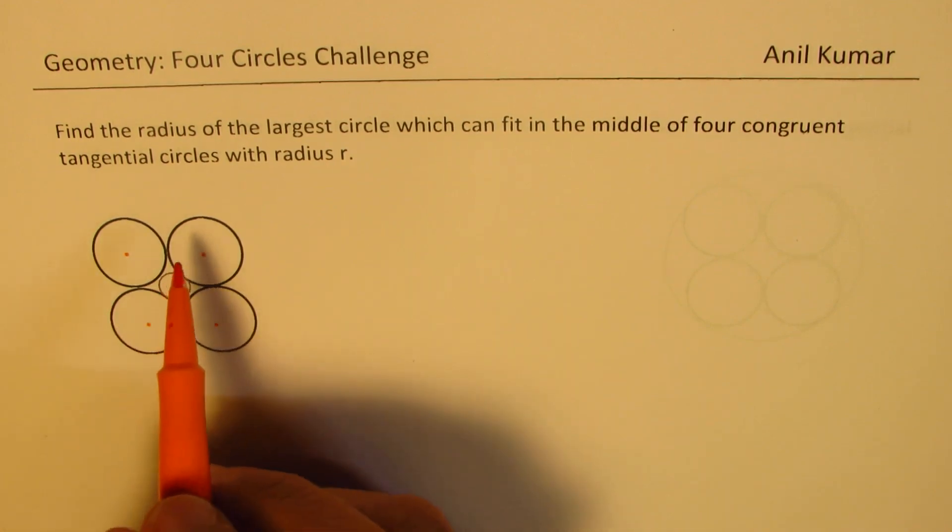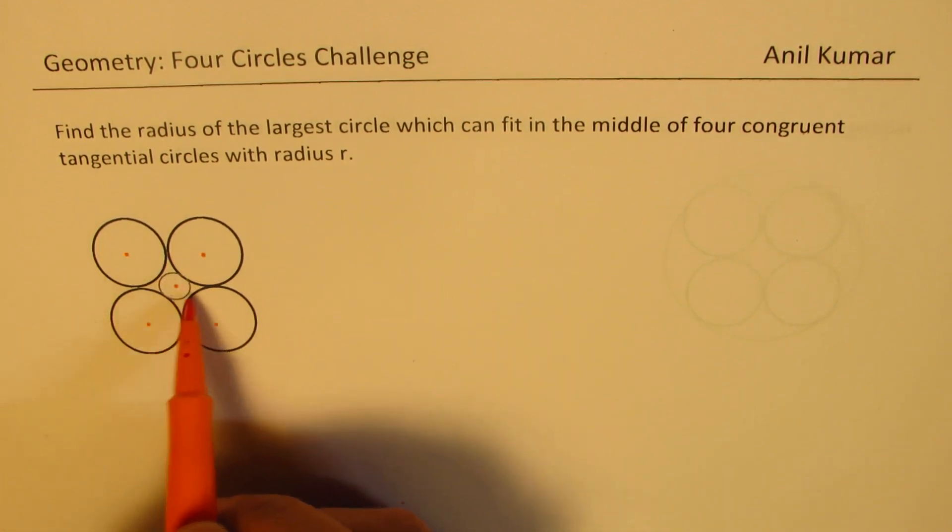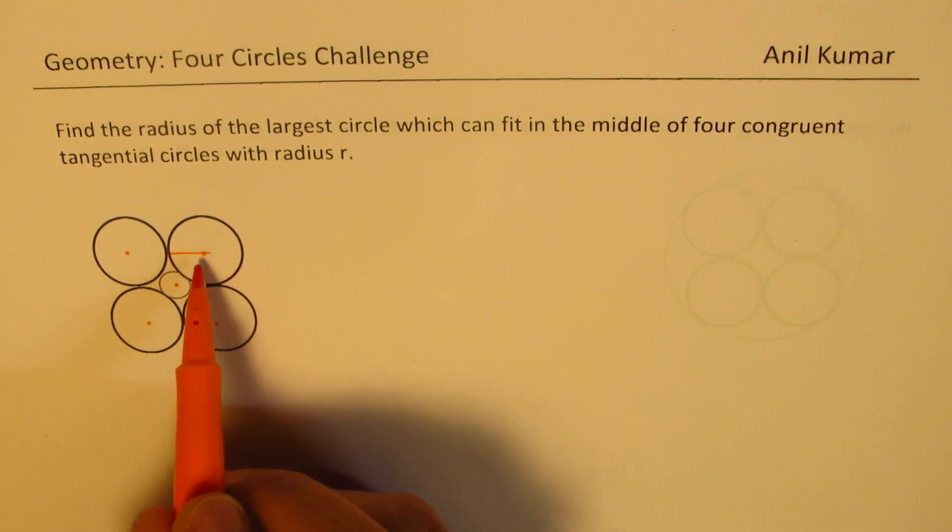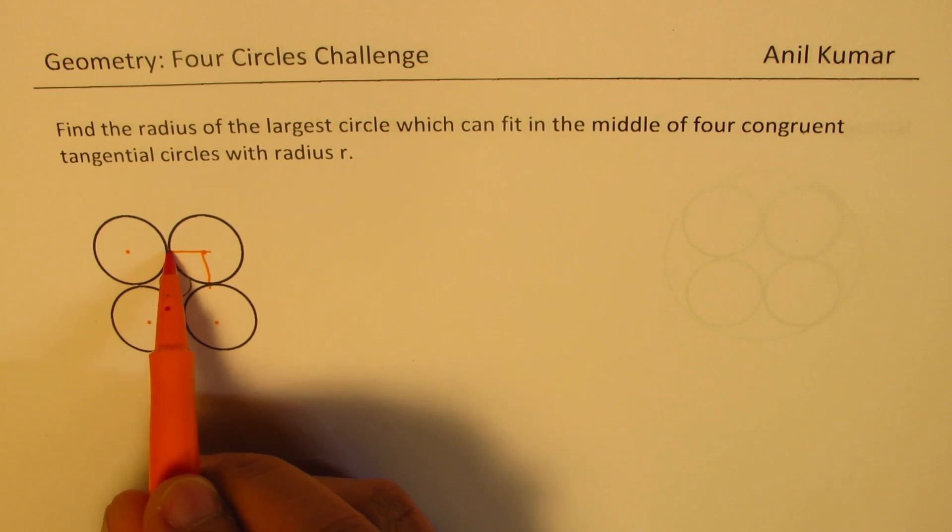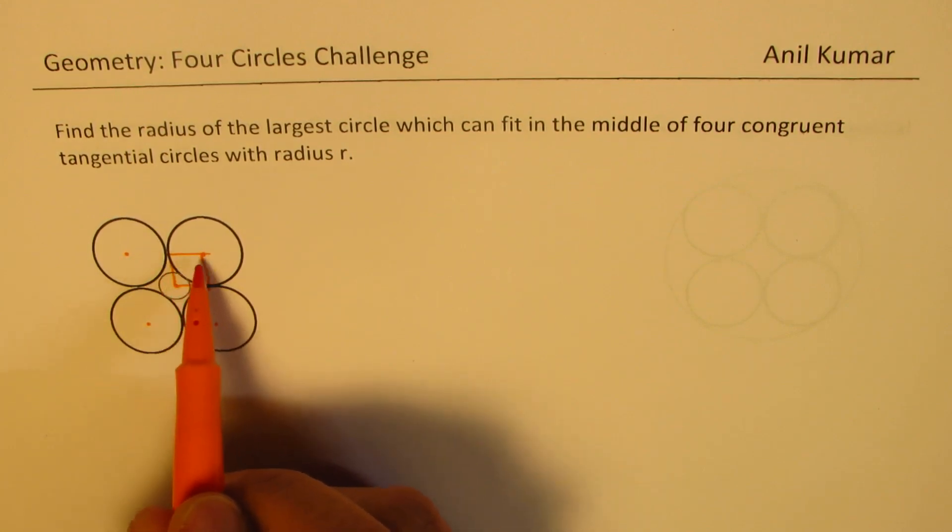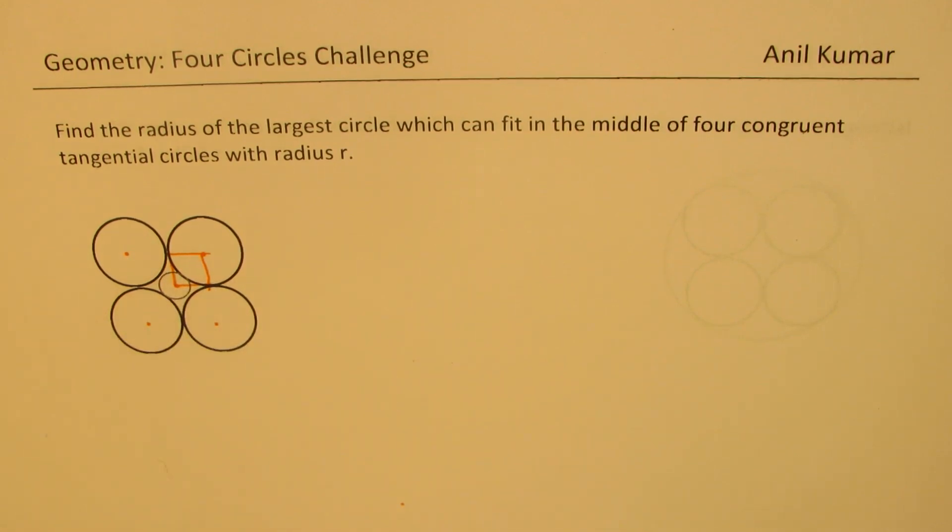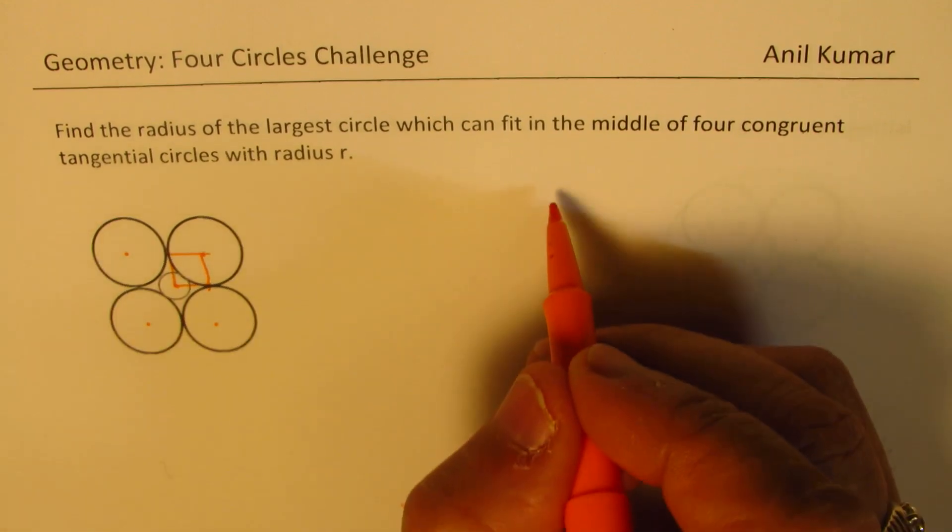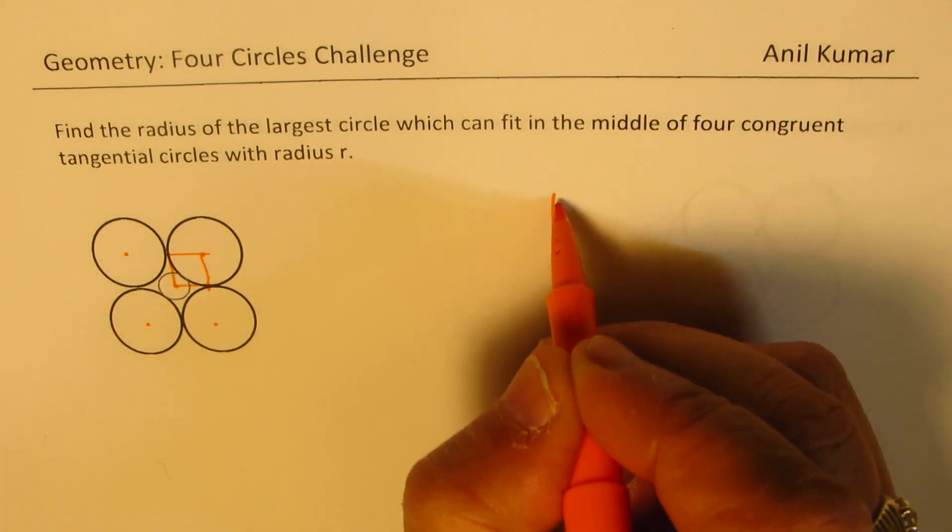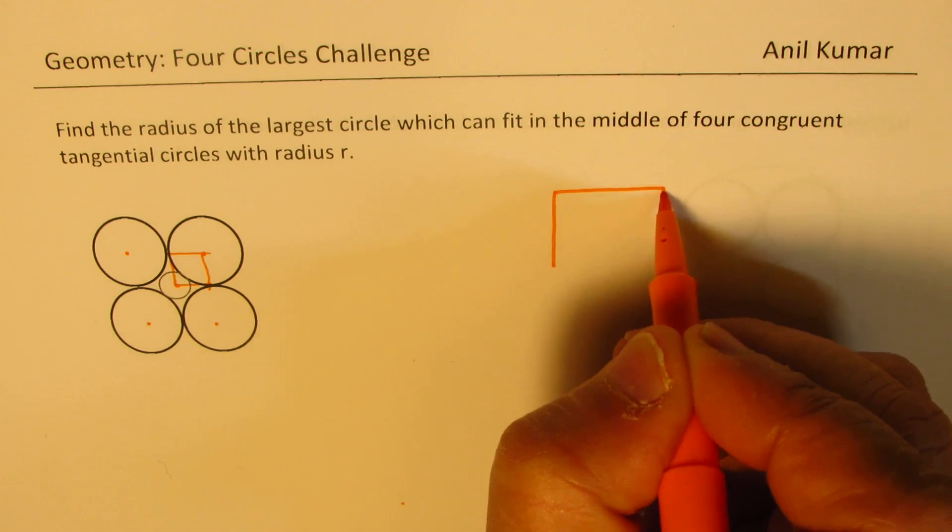If you observe that these tangential circles form kind of a square, do you see this? That becomes a square where each side of the square is same as the radius of the circle. So let me make an enlarged view of this square. We are just making an enlarged view of this square.